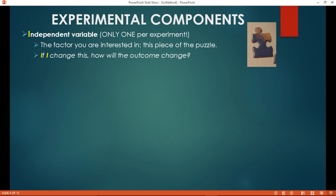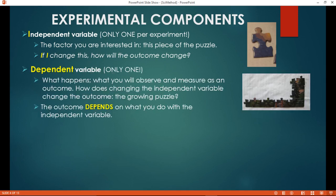The components of an experiment, we start with an independent variable. This is what I'm interested in. I'm interested in knowing where this piece goes. If I change this, how will the outcome change? The dependent variable is what happens. If I change the independent variable, what's the outcome? The outcome depends on what I did with the independent variable. There's only one of each of these. One independent variable so that I can isolate and be certain that when I change that, the change in the independent variable is responsible for any change in the outcome that I see.